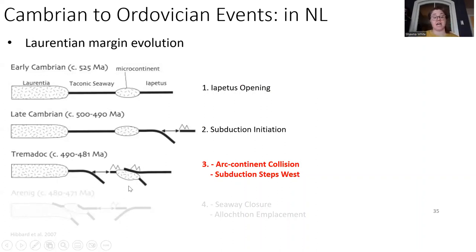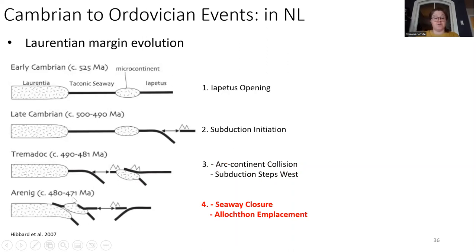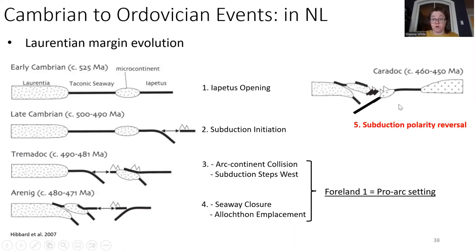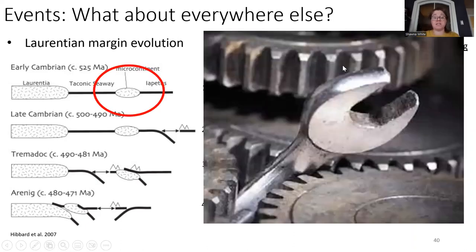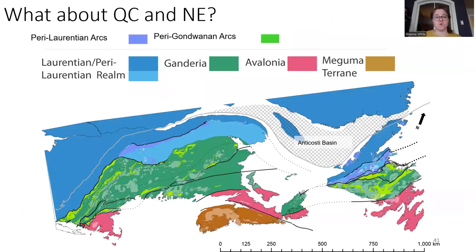At some point, subduction had to initiate because that ocean is eventually going to close. The arc that formed does collide with Laurentia; however, that earliest collision is on an offshore microcontinental block — that severed fragment — not the Laurentian craton. Subduction then steps inwards as the seaway closes, giving us our allochthons — our traditional view of the Taconian orogeny — placed on top of the Laurentian margin. This places our foreland on the down-going subducting plate in a pro-arc setting. Eventually subduction polarity reverses underneath the Laurentian margin, placing the foreland in an upper plate, or retro-arc setting.